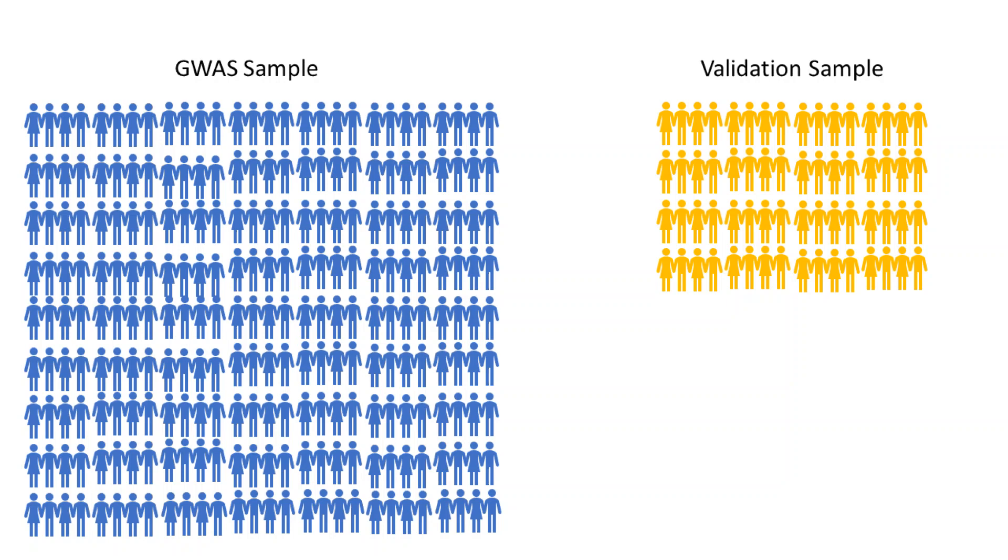A quick side note, the validation sample must be composed of individuals whose data were not used in the genome-wide association study on which the polygenic score algorithm was based. This is necessary to prevent bias.